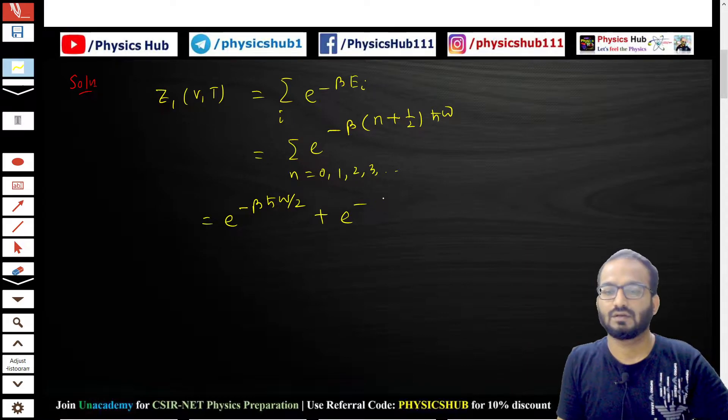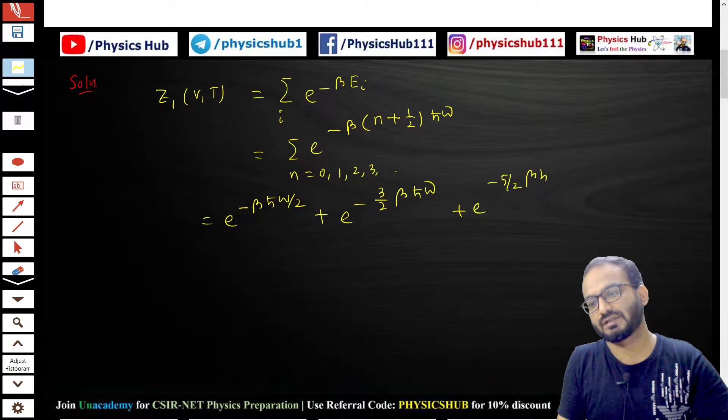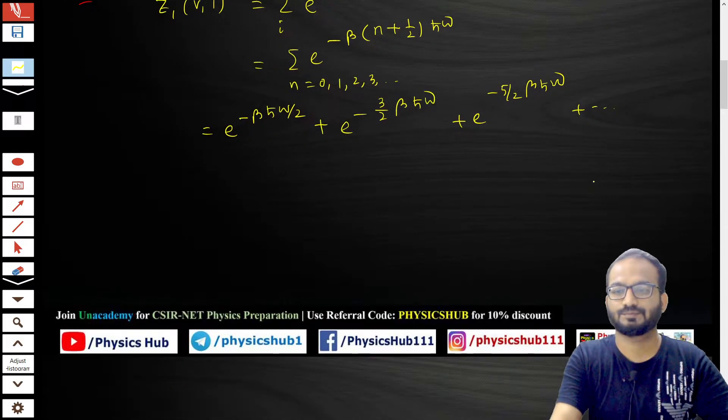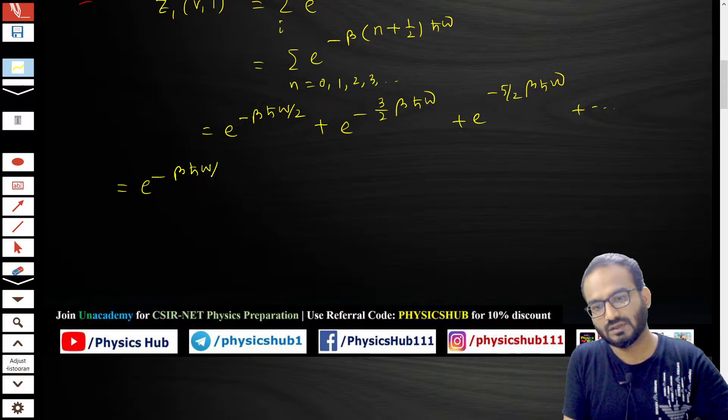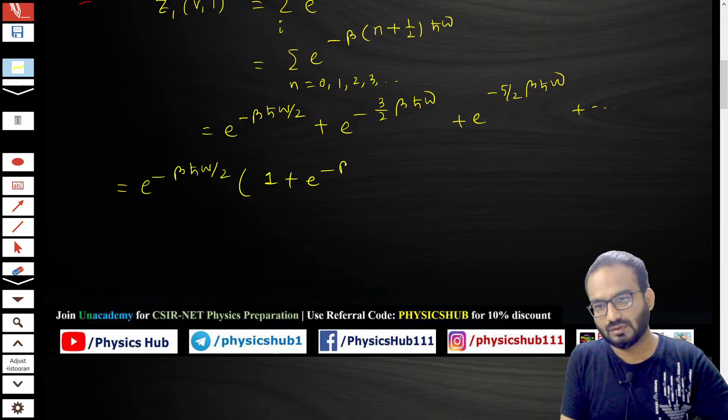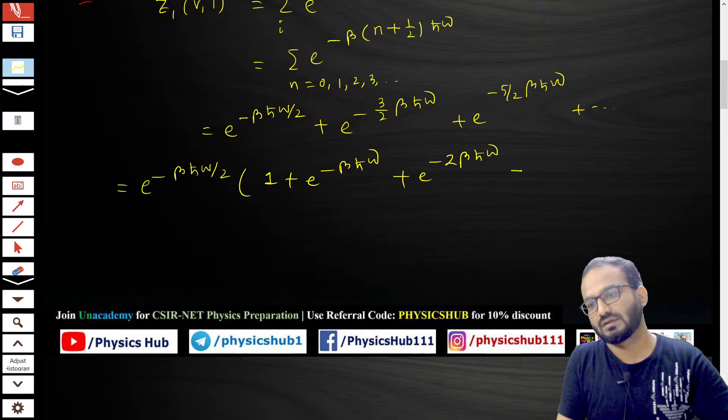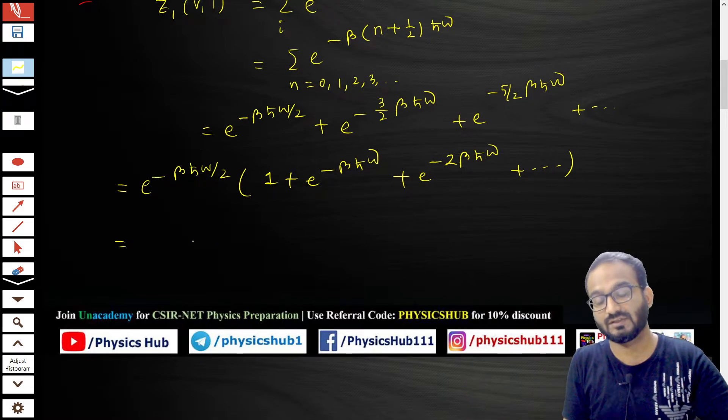You can take out e to the power minus βℏω/2 as a common factor, giving 1 plus e to the power minus βℏω plus e to the power minus 2βℏω and so on. You can see this is the formula like 1 + x + x² + ..., which is an infinite geometric series.